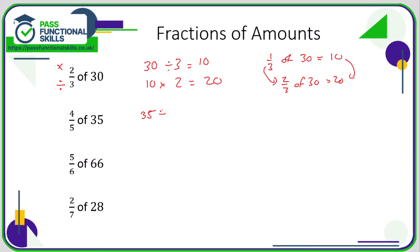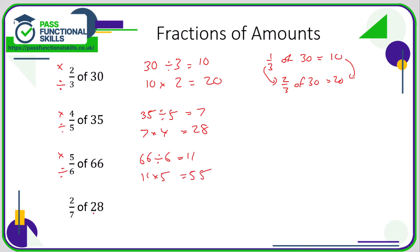Four fifths of thirty five: thirty five divided by five is seven, then multiply by four — seven times four is twenty eight. Five sixths of sixty six: sixty six divided by six is eleven, eleven times five is fifty five. Two sevenths of twenty eight: twenty eight divided by seven is four, four times two is eight.